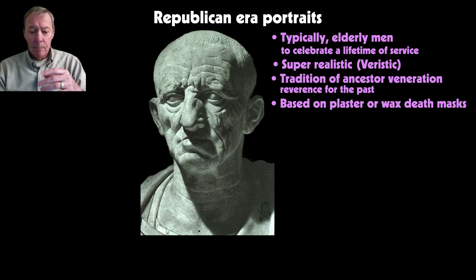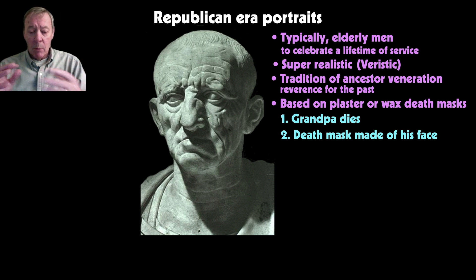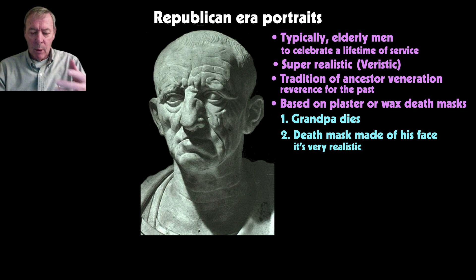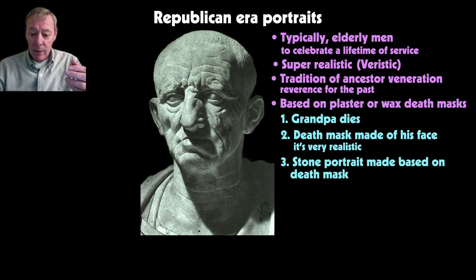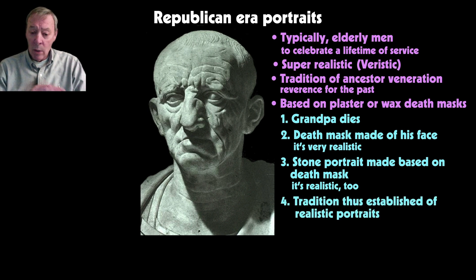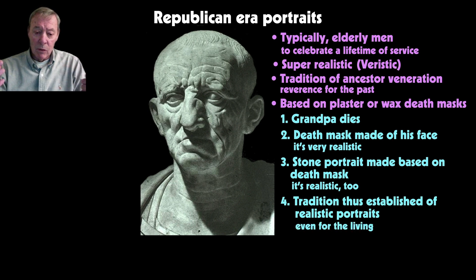The process would be: grandpa dies, a death mask is made from plaster or wax—very realistic, obviously, being based on the face itself—and then that mask would be turned over to a professional sculptor who would create a marble portrait based on the death mask. This establishes early in the Republican era a tradition of realistic portraiture. Eventually the tradition carries on even for portraits of living individuals.